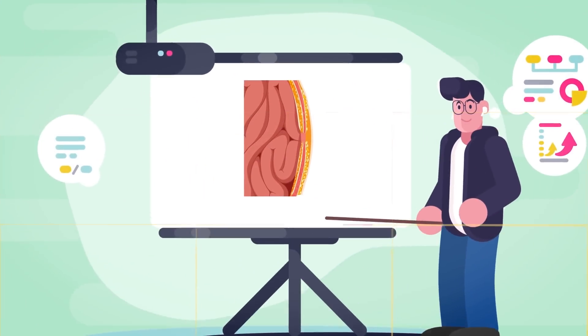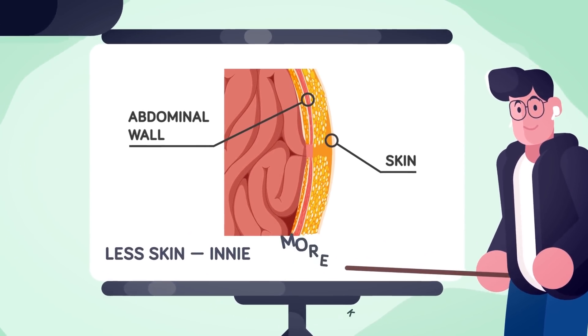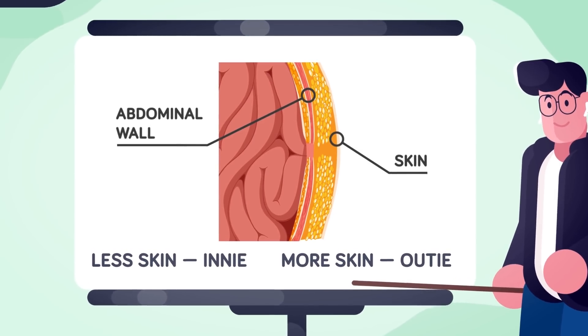Instead, it actually depends on how much space there is between the skin and the abdominal wall. Less skin leads to an innie, while more skin makes it more likely to have an outie.